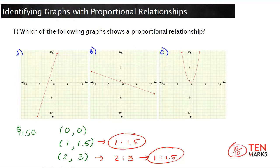Now let's look at the problem above. Which of the following graphs shows a proportional relationship? Now remember, proportional relationships must pass through the origin (0,0), and they must be straight lines.